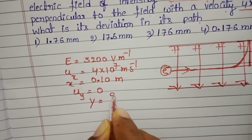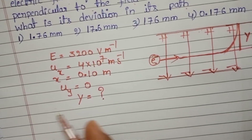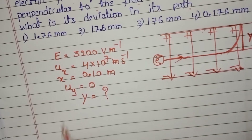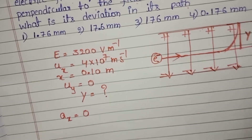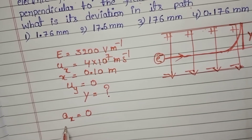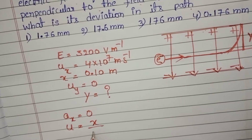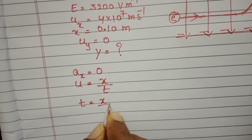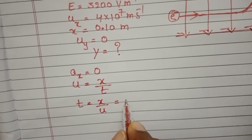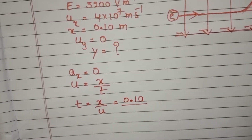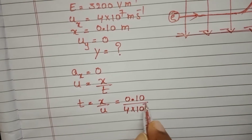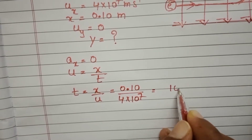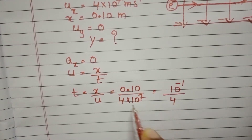We want to find the distance travelled by the electron along the y-direction. Along the x-direction, the velocity of the electron is constant because there is no acceleration along x. From the relation initial velocity equals distance by time, time equals distance by velocity. So time equals 0.10 divided by 4 into 10 to the power 7.